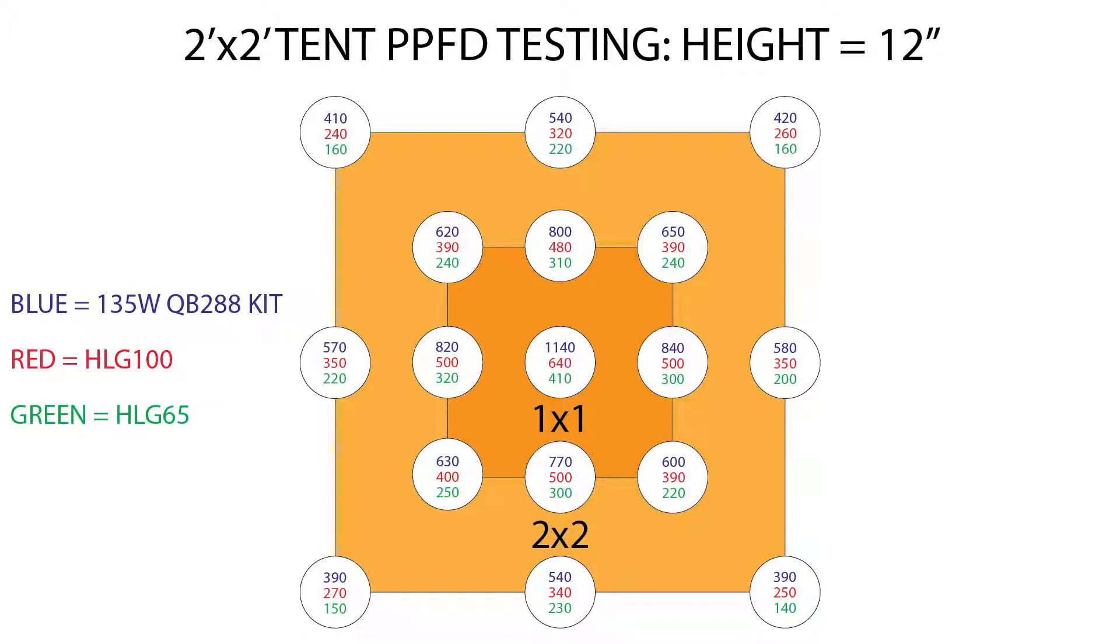Now moving the light down to a distance of just 12 inches between the top of the sensor and the bottom of the light, the 135 watt kit was totally blasting the space with a center value of 1140, and an average of 715 micromoles around the 1 foot perimeter, and 480 micromoles around the 2 foot perimeter. The HLG100 had a center value of 640, with an average of 445 around the 1 foot, and 300 around the 2 foot. And last of all, the HLG65 read 410 micromoles on center, with an average of 275 at 1 foot, and 185 micromoles at 2 feet.